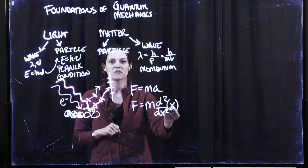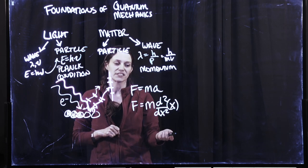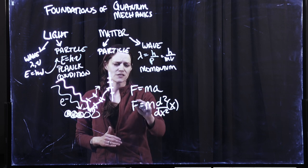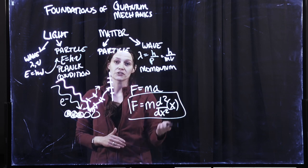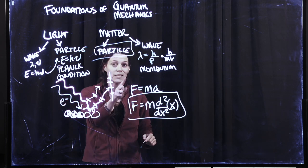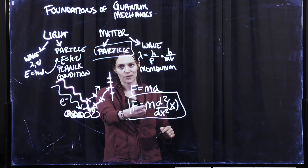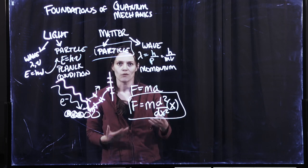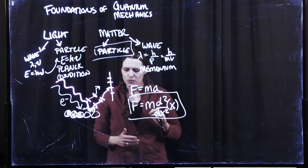So because the first derivative of the position is velocity, the second derivative of position is acceleration. And so this is Newton's equation, and this describes all matter in its particle form. But how do we incorporate wave-like matter or wave-like properties into this equation? Well, we need a new one.